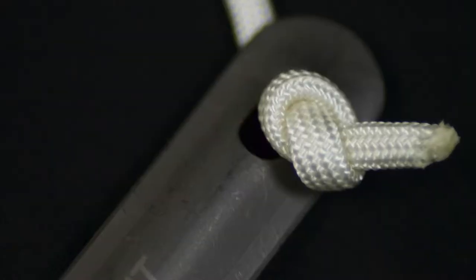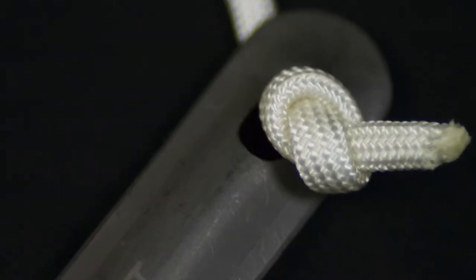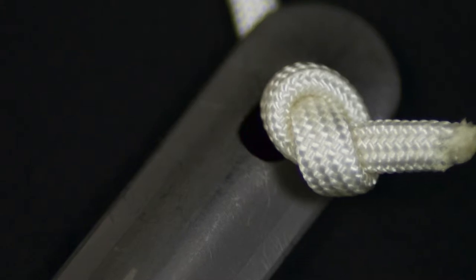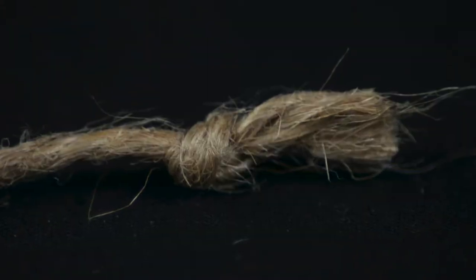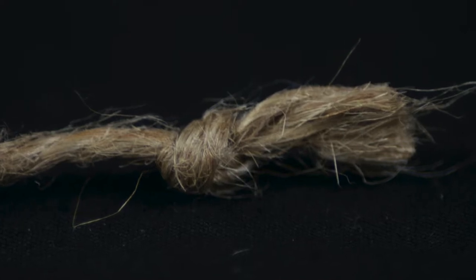It is used as a stopper knot to prevent cordage from passing or sliding through another object, such as securing thread in a needle. And it's also used to prevent fraying of the working or standing ends of cordage.